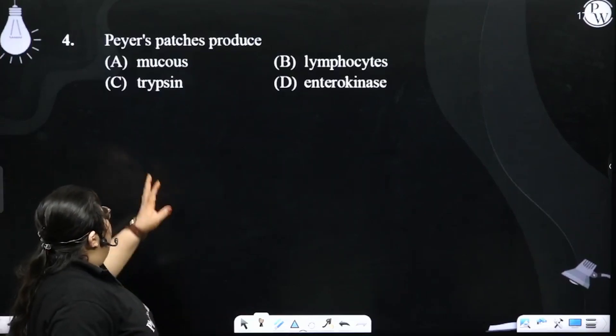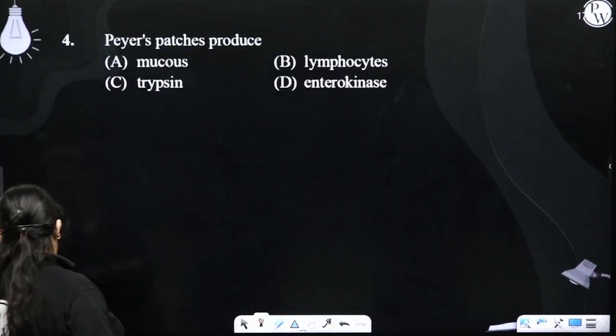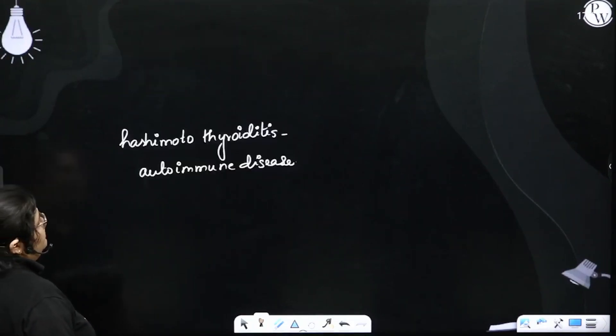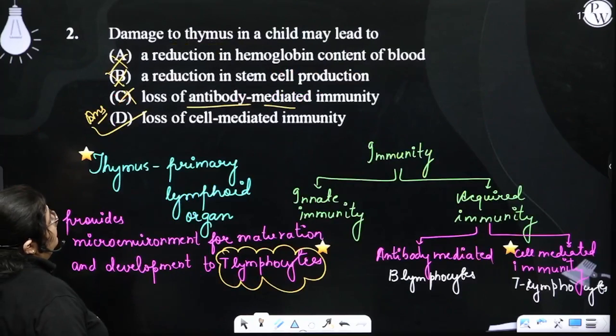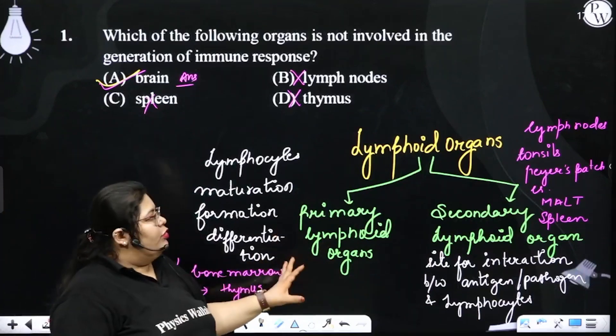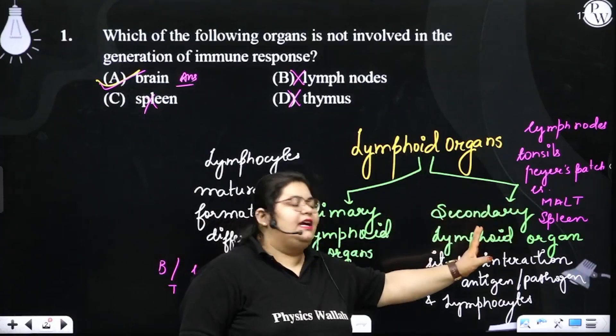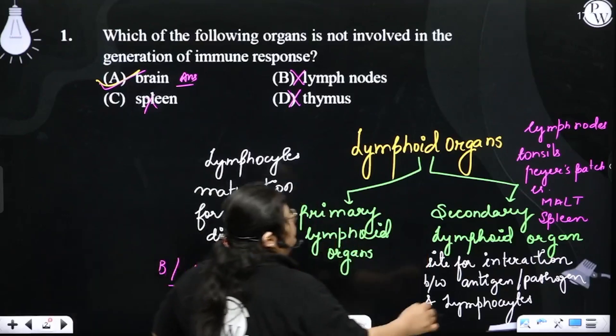Peyer's patches produce: is it mucus, trypsin, lymphocyte, or enterokinase? We have seen in the previous question that the lymphoid organs are of two types, out of which the Peyer's patches is the secondary lymphoid organ. Let us take it there.